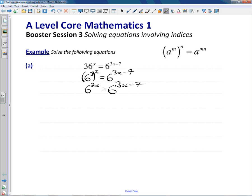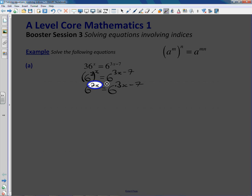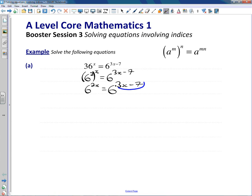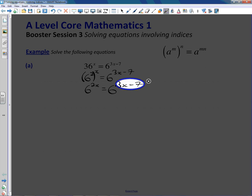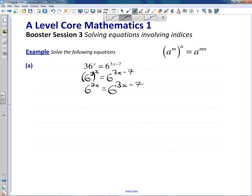And of course now, because we've got the same base—we've got the 6 on either side—we can just compare our powers. There we've got 2x on our 6, and there we've got 3x minus 7, so it must mean that those two expressions are equal to one another.